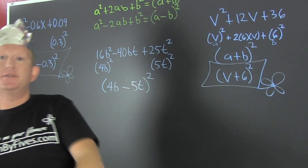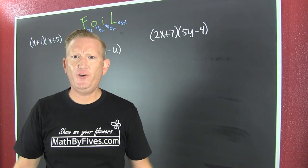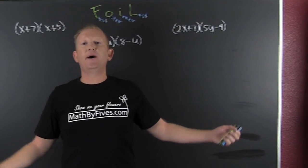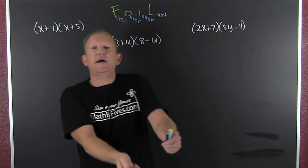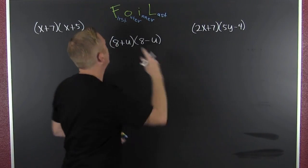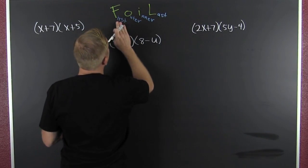First, outer, inner, last. Ha ha! Foiled again! What are we talking about? First, outer, inner, last. What are we talking about? FOIL! First, outer, inner, last.